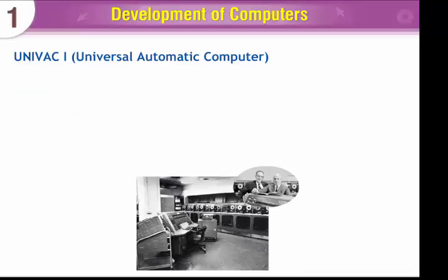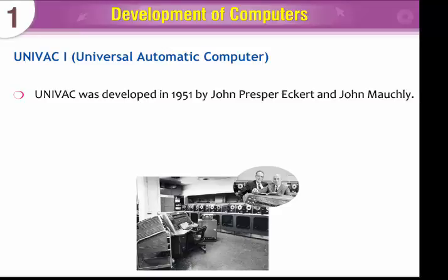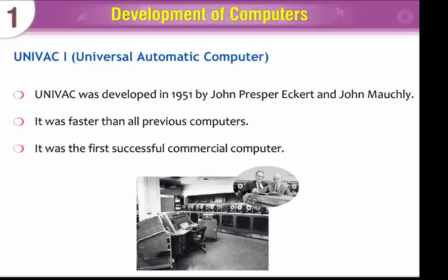UNIVAC 1 — Universal Automatic Computer — was developed in 1951 by John Presper Eckert and John Mauchly. It was faster than all previous computers and was the first successful commercial computer.